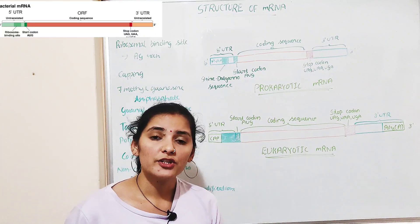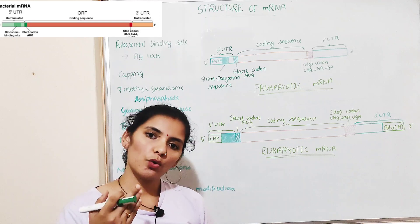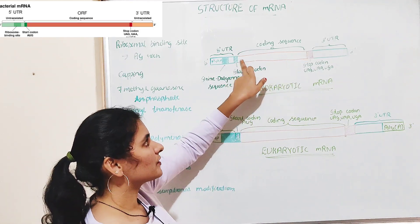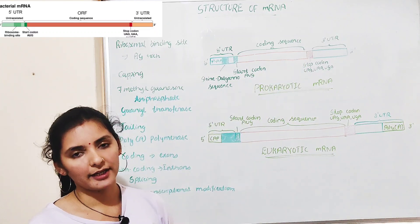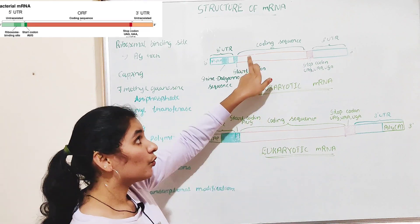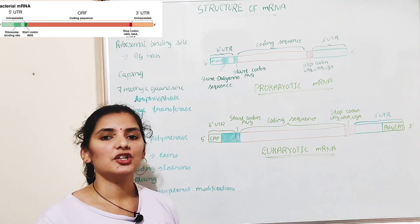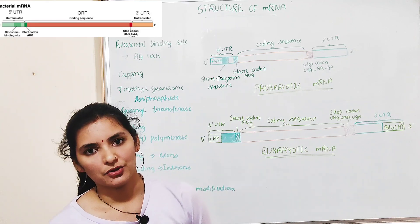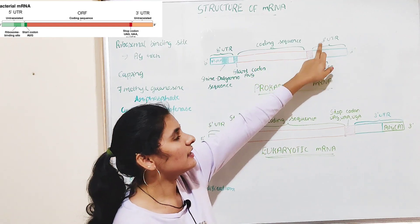Between the start codon and the stop codon is the coding sequence. The coding sequence is the region that consists of a sequence of codons that code for particular amino acids. It is this region which consists of codons that code for a sequence of polypeptide during translation or protein synthesis. The coding sequence is of great significance because it produces the essential protein during translation.